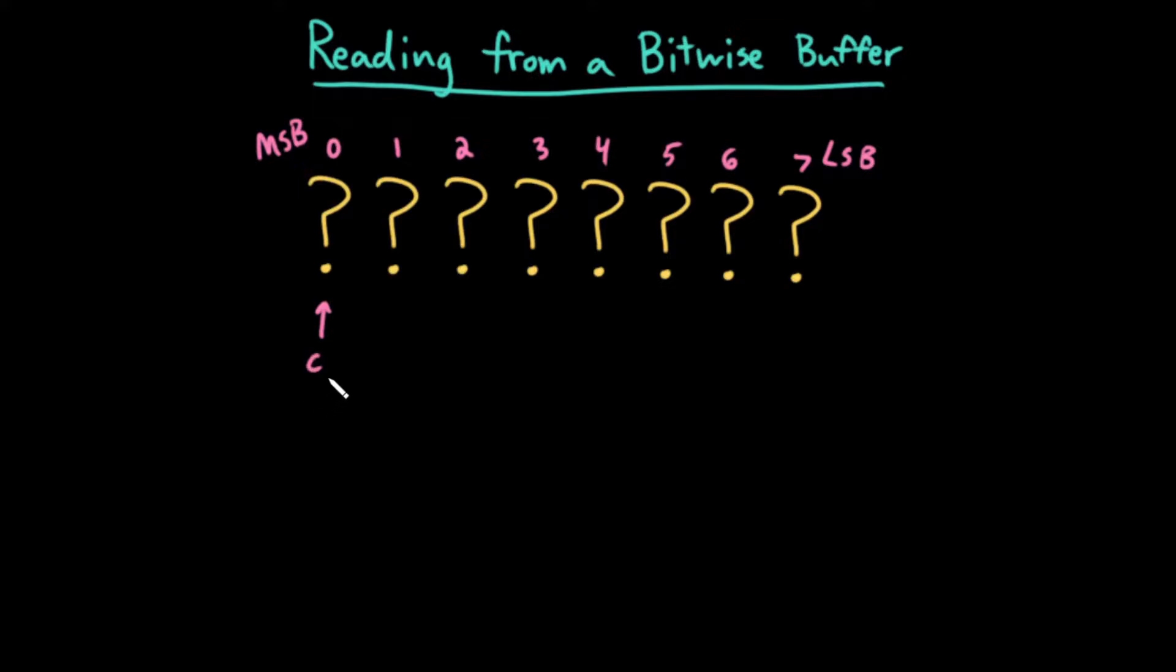Then how do I extract the current bit? When c is zero, I want to extract this bit specifically. By extract, I mean get either zero or one as a value.